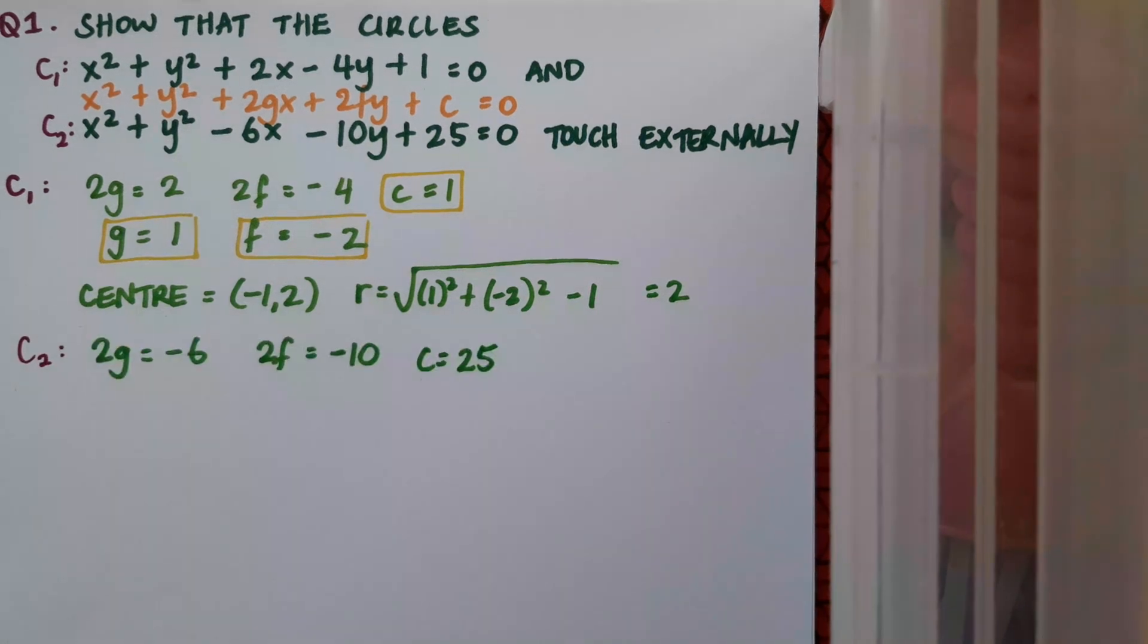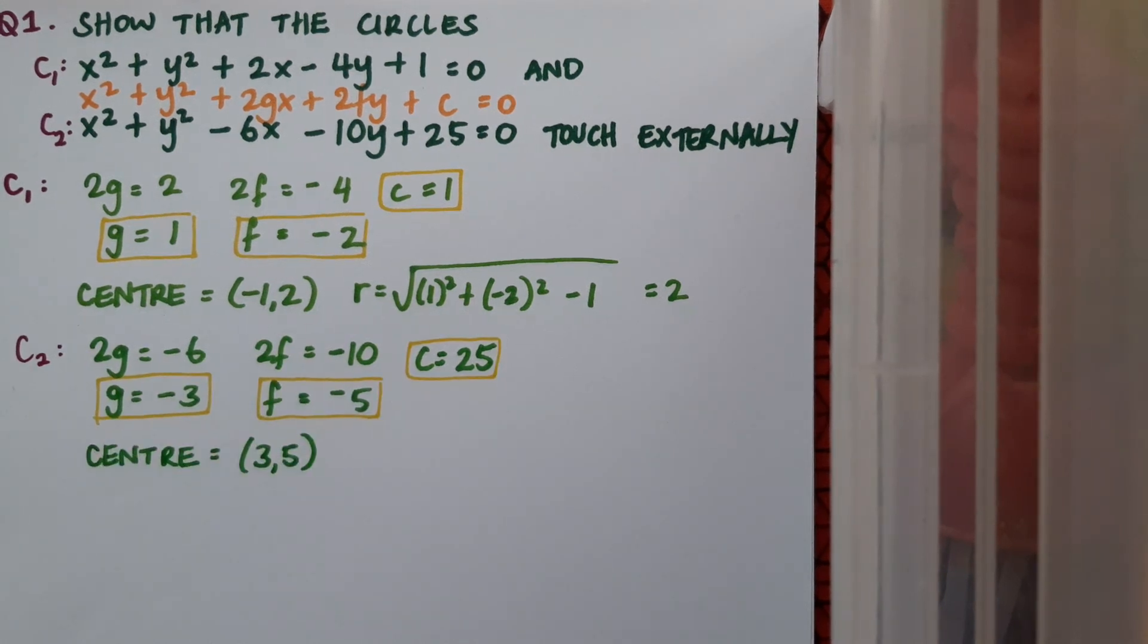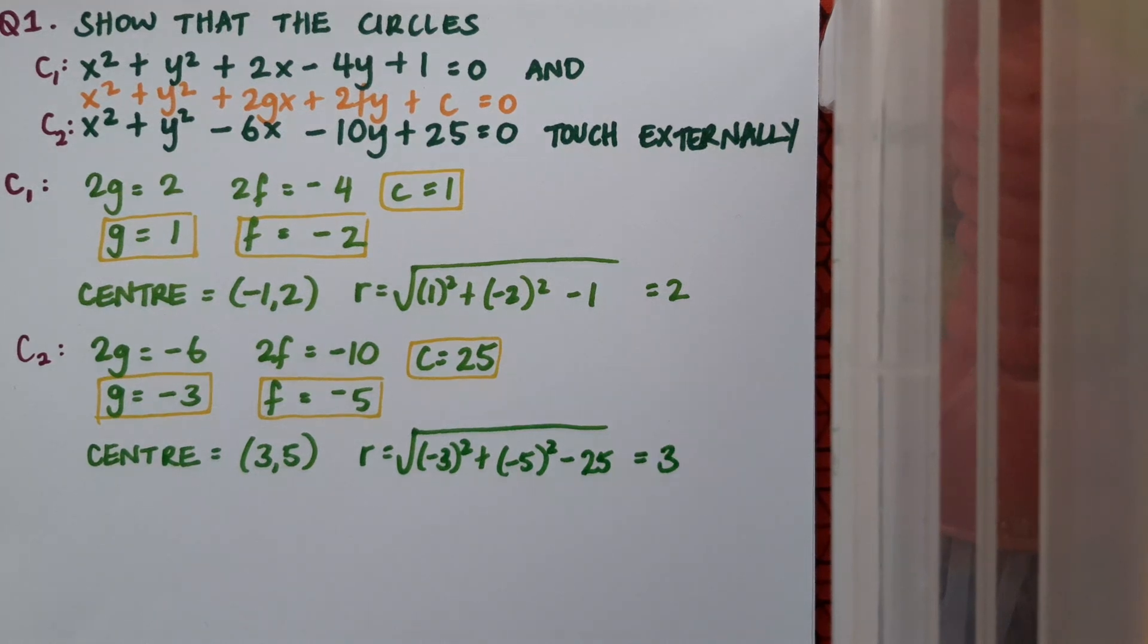Now onto circle 2 and I'm figuring out my g, f and c values. And again I'll use these to get centre and radius. So centre is 3, 5 and radius works out as 3.